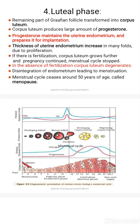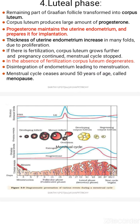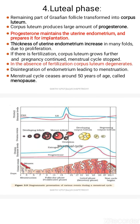When there is fertilization, the corpus luteum remains, the menstrual cycle stops, and pregnancy continues. When there is no fertilization, disintegration of the endometrium occurs, leading to menstruation. The menstrual cycle ceases around 50 years of age, which is called menopause.